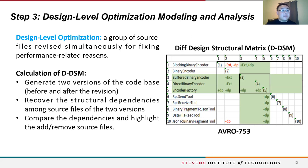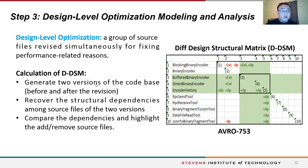As shown in the figure, the rows and columns of the DDSM represent the source files, ranked in the same order. The green background indicates newly added files. In each cell, a green plus symbol means the dependency is newly added, and a red minus symbol means the dependency is removed in this revision. The calculation of DDSM involves three main steps: generate two versions of the code before and after revision, recover the structural dependencies among source files, then compare the two DSMs and highlight the added and removed source files and dependencies.